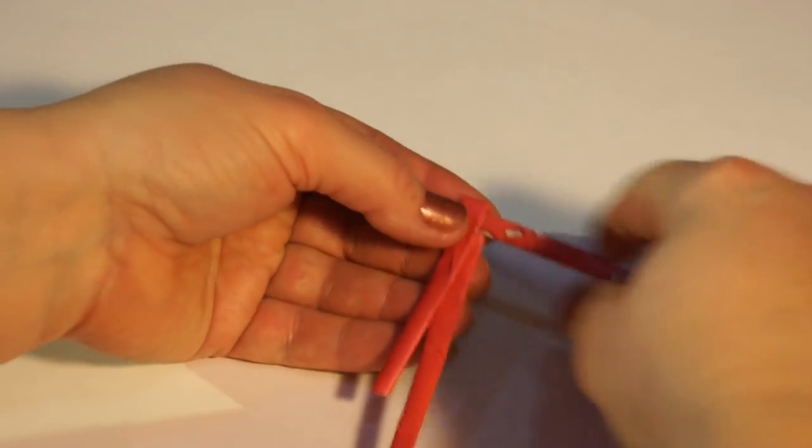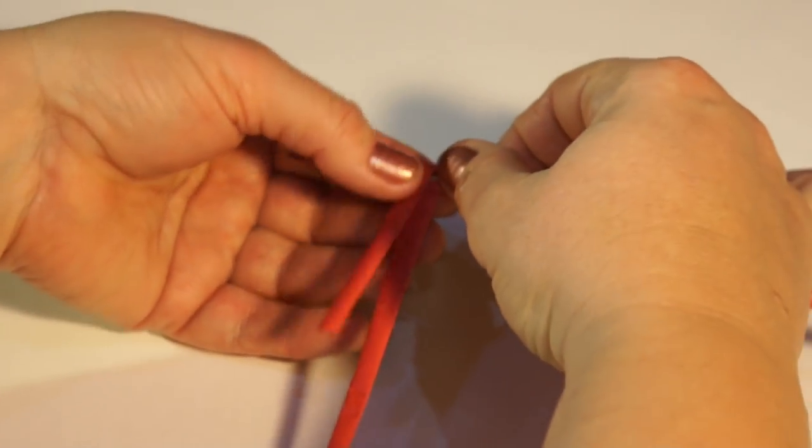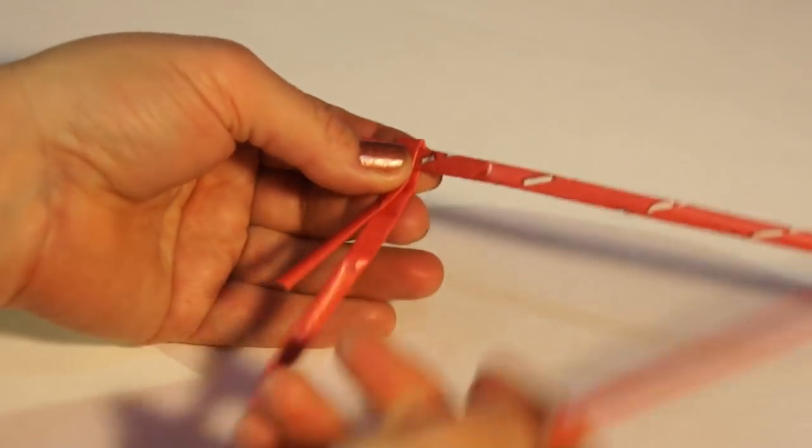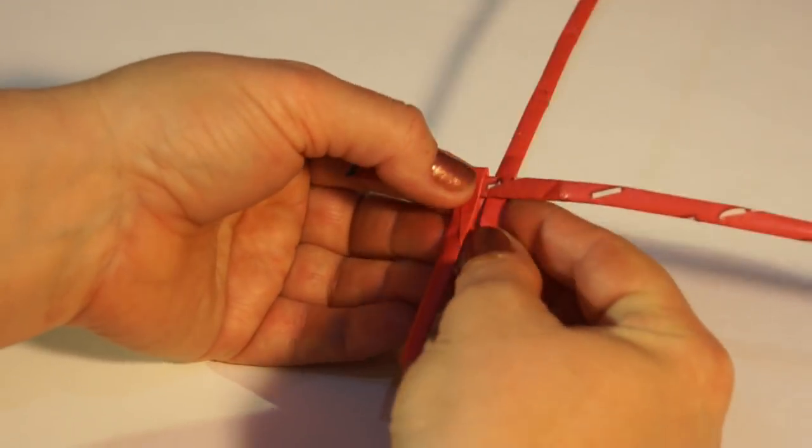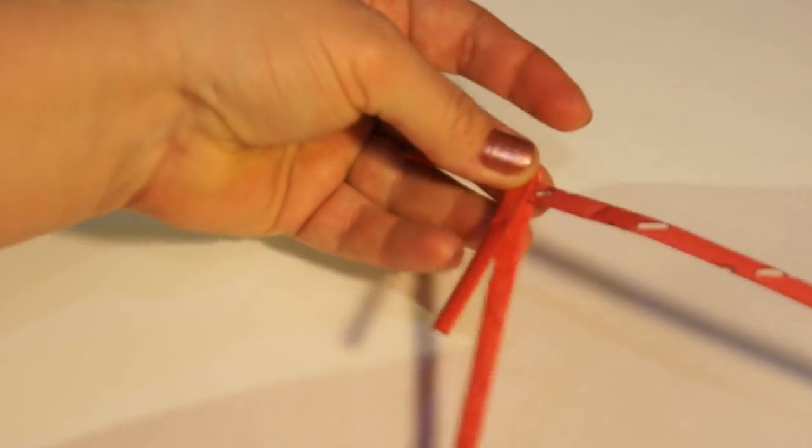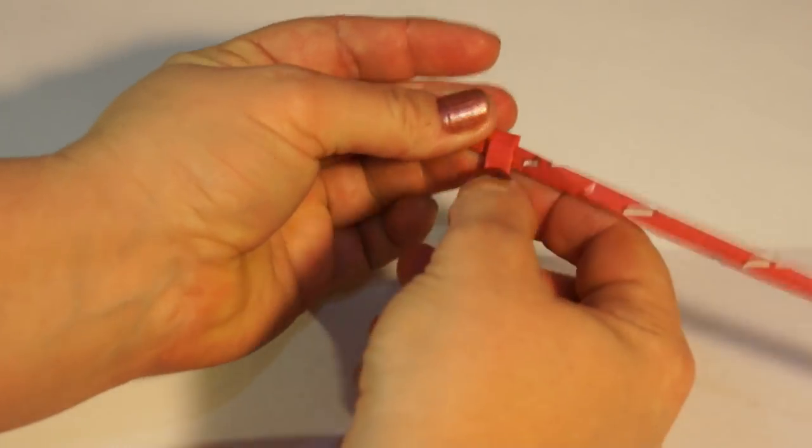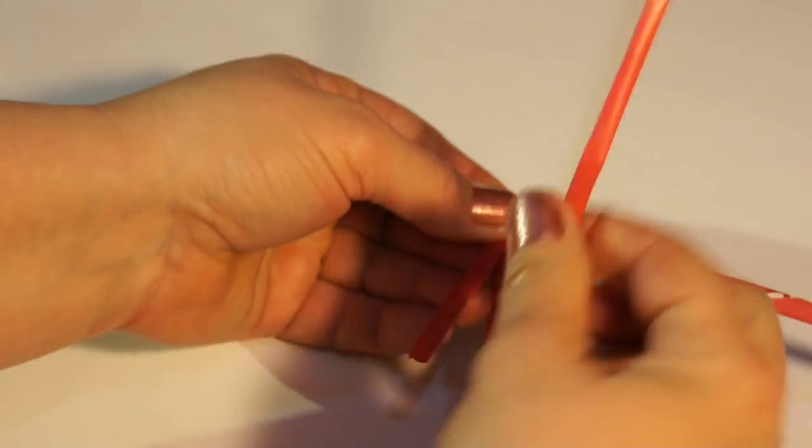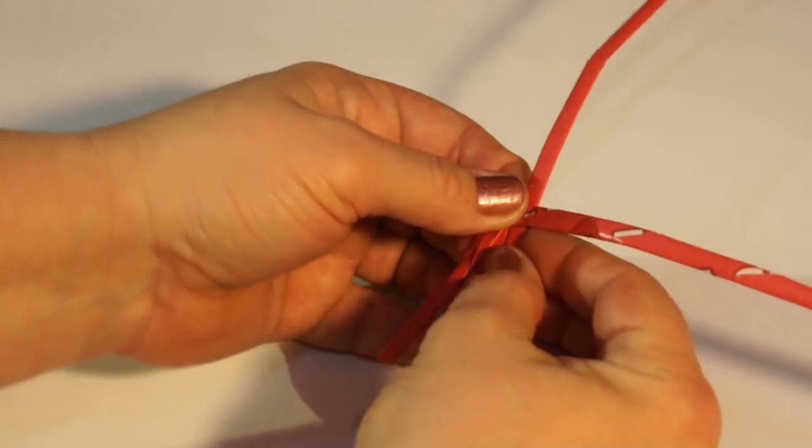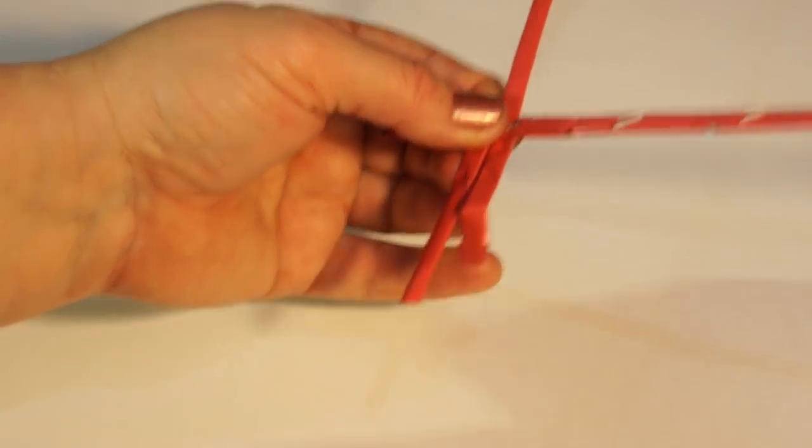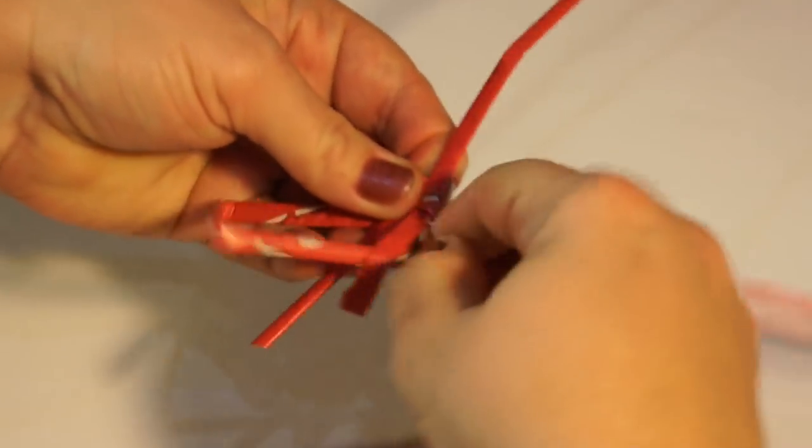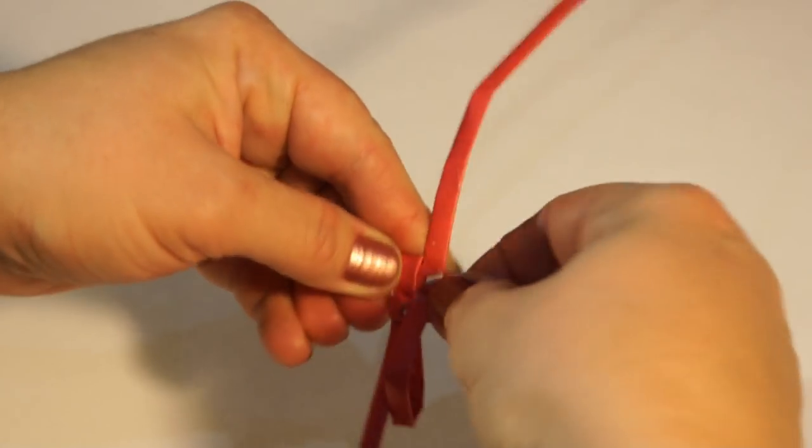So let's make the first knot. I take two long stripes. I flatten the tubes into stripes and shape a loop like this. Please take a look once again. I place the shorter end of the stripe from the front, shape a loop, and lead the longer end behind the horizontal stripe. Then I lead it from beneath and through the loop.